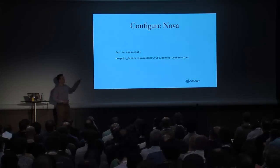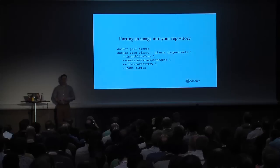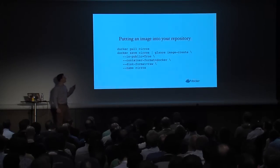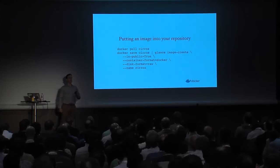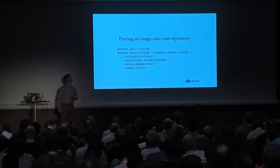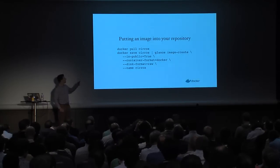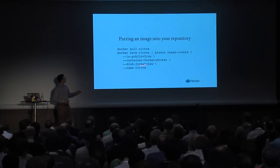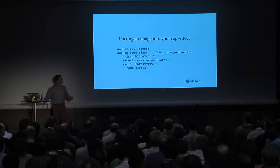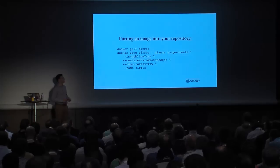You download the driver and set it in your compute driver. The big thing that changed in Juno was that now you can put images directly in Glance, and it looks fairly similar to how you might otherwise upload images to Glance. We do have to export the data from Docker using Docker save, then pipe that to Glance Image Create. With Glance Image Create, we can import that and give it a name. You'll also note the container format is Docker, which lets Glance and Nova know it's going to be a Docker image — it only works on the Docker driver.